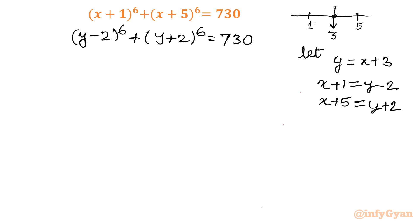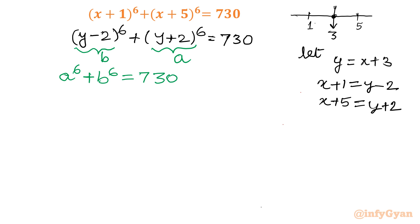Now substitution again: I am going to write y+2 as a and y−2 as b. Our equation will be converted into a⁶ + b⁶ = 730.